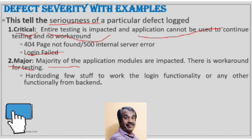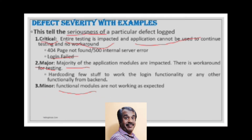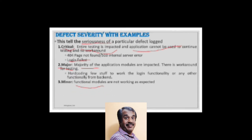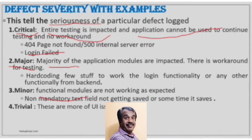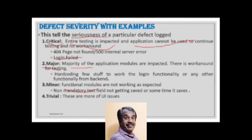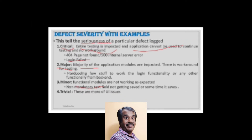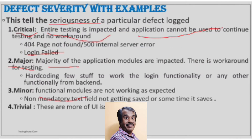The third severity level is Minor, classified when certain functionalities are not working. The fourth is Trivial — these are not very important and are often UI issues, fixed based on the criticality or need of the customer requirement.